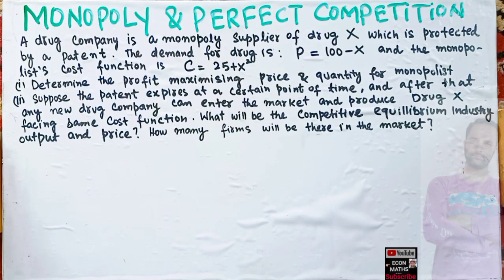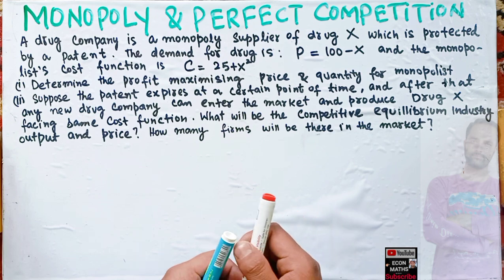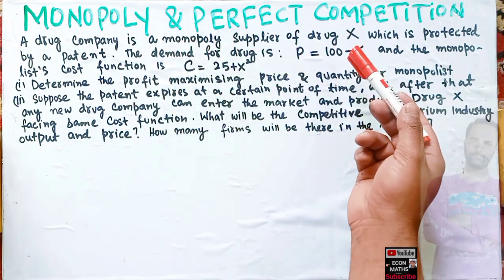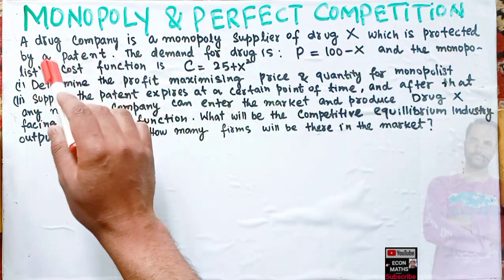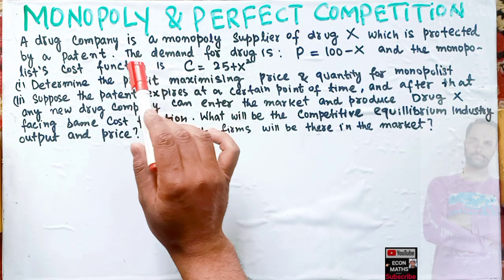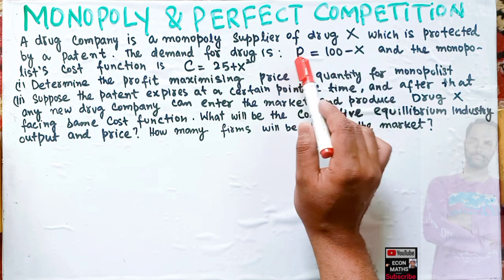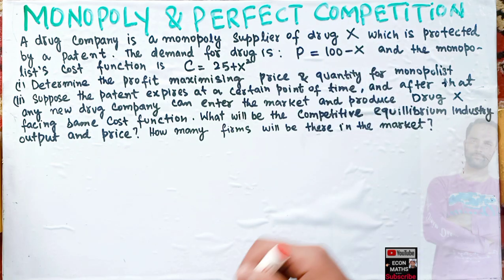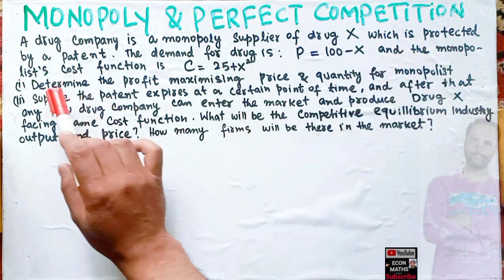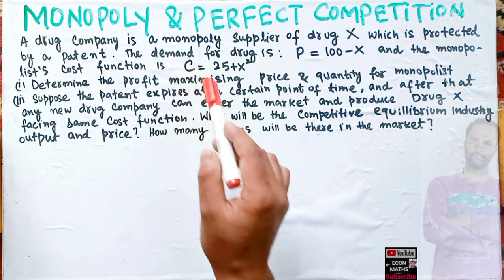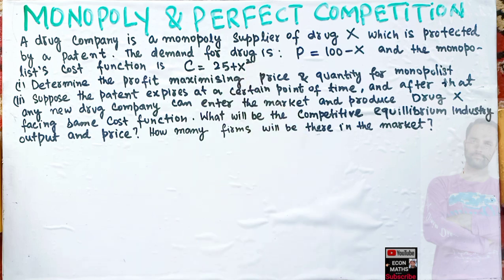Let us solve a numerical on monopoly and perfect competition, and how to find the number of firms in a competitive equilibrium industry. The question is: a drug company is a monopoly supplier of drug X, protected by patent, so nobody else can produce it. The demand for the drug is given as p = 100 - x, where p is price and x is quantity. The monopolist's cost function is c = 25 + x².